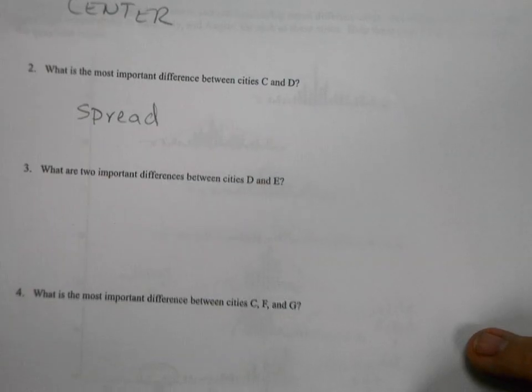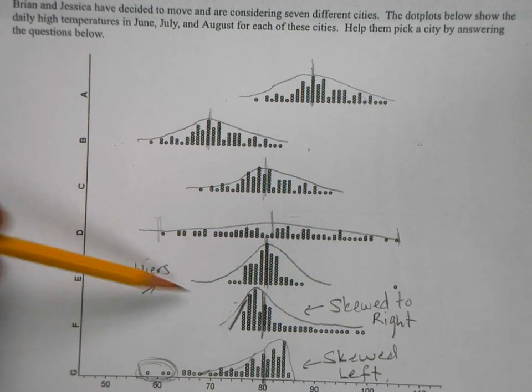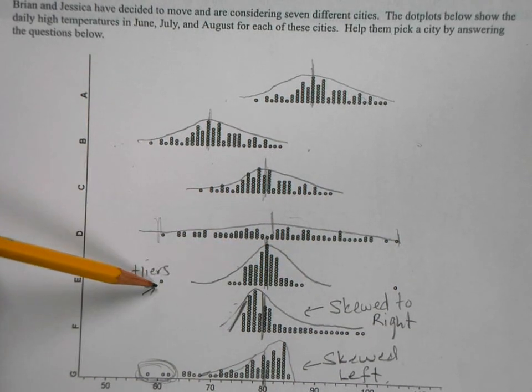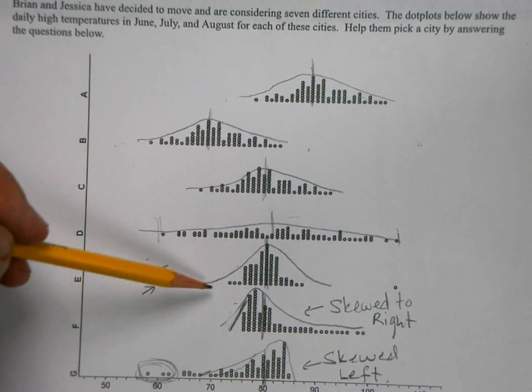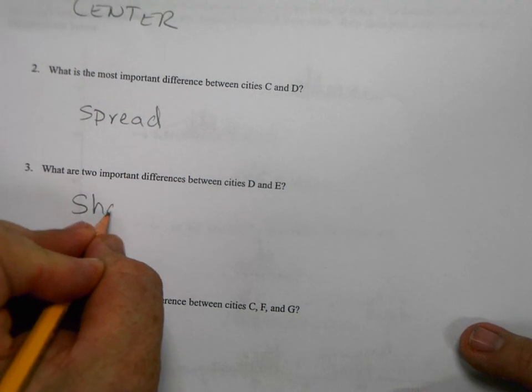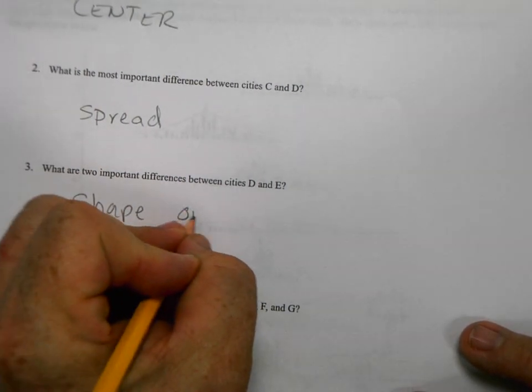What are two important differences between cities D and E? Definitely the shape. Look at the shape, and then an outlier maybe. So we got shape and we've got outliers. So we've got our shape and we've got our outliers.